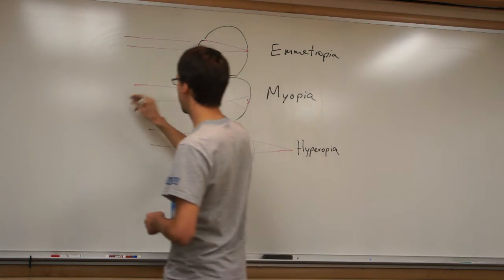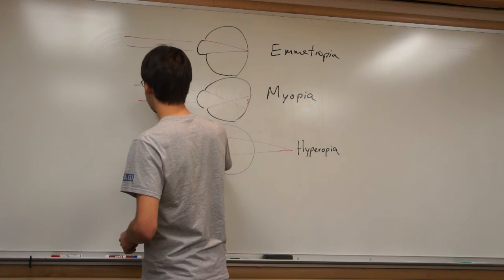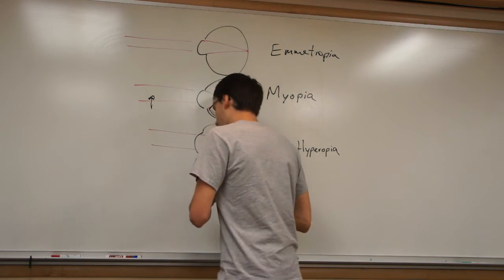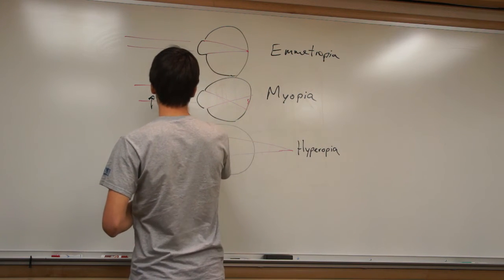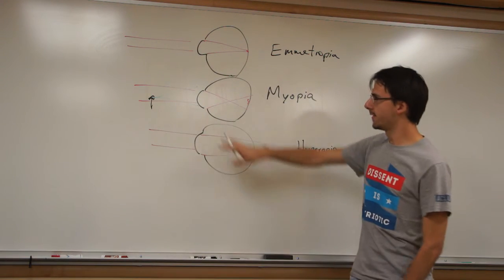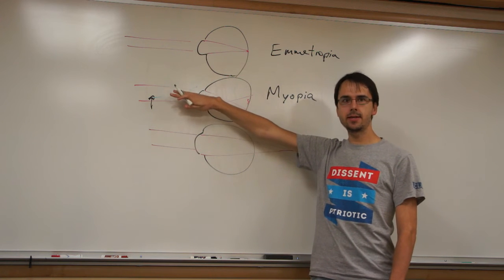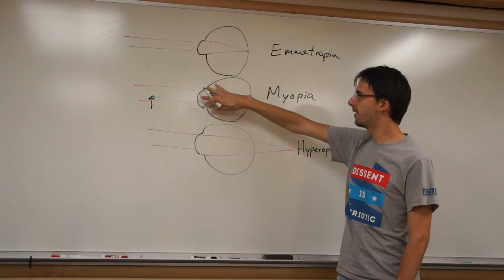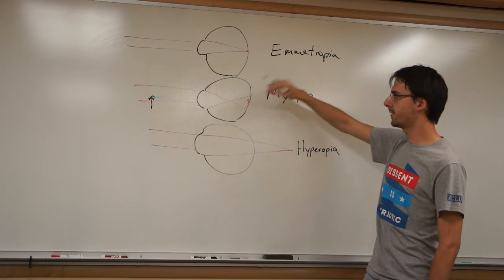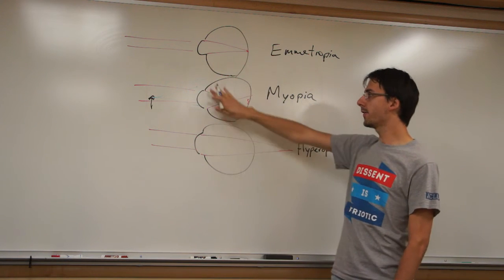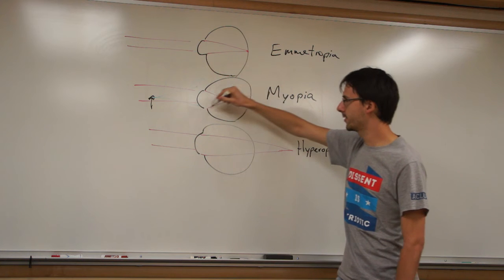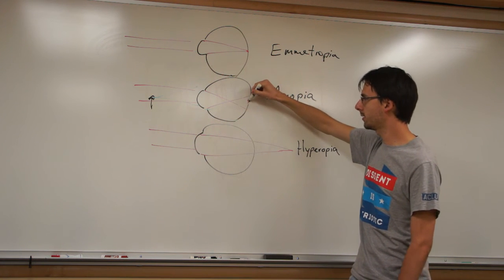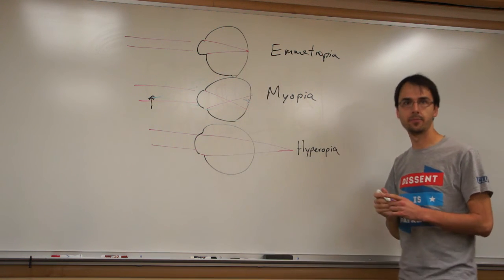But objects that are closer, say we have another object that's here, rays are going to be diverging from it, right? And so even though for parallel rays coming in, this optical system focused everything in front of the retina, now the power of the system is the same, but everything is going to actually come to a focus right here, and we're going to be happy, and we're going to see clearly. Okay?